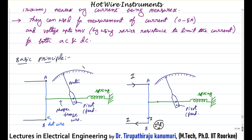Because of the temperature that is produced, the metal will get expanded. We are going to use that expansion principle — when the current is passed through the material, due to the heat produced due to I square R loss, that material will expand.